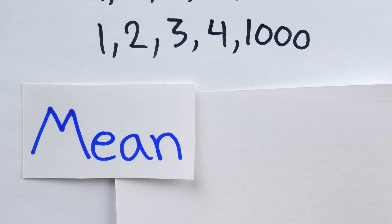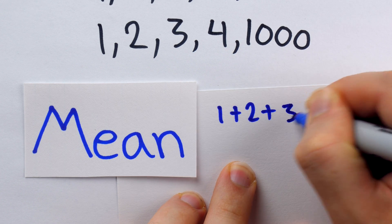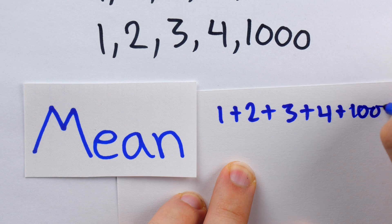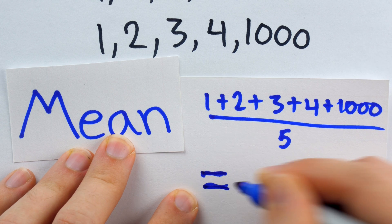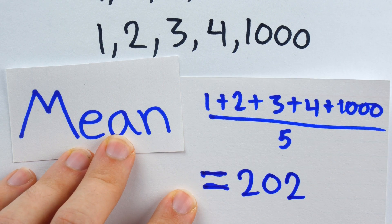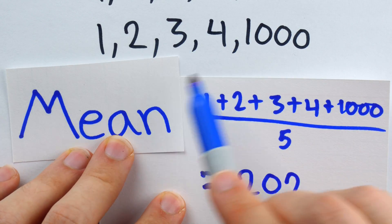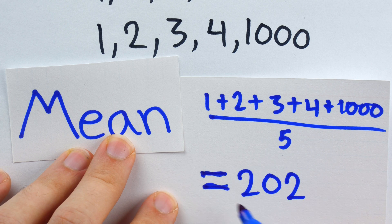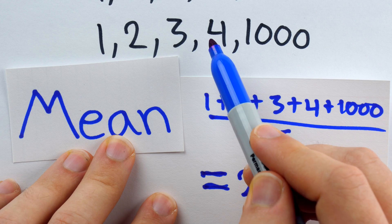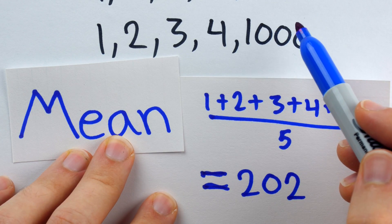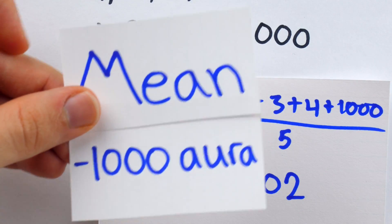Alright, what's the mean of our brand spanking new data set? Well, it would just be the sum of the data points, 1 plus 2 plus 3 plus 4 plus 1,000 divided by the total number of data points. So, divided by 5. This is 202. What do you think? Is that a very good measure of center for this data set? We would say no. This is an absolutely terrible measure of center for this data set. Most of the data points are between 1 and 4. It's just this one outlier of 1,000 that has completely jacked up the mean. And for that, the mean gets minus 1,000 aura.